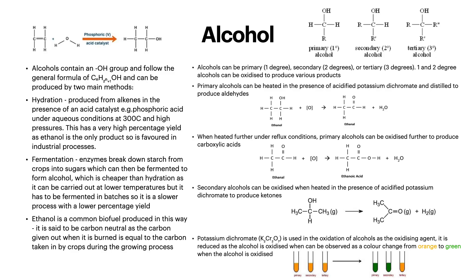Moving on to alcohols — these contain an OH group and follow the general formula CnH2n+1OH, and can be produced by two main methods. First, hydration: produced from alkenes in the presence of an acid catalyst, such as phosphoric acid, under aqueous conditions at 300°C and high pressures. This has a very high percentage yield as ethanol is the only product, so it is favoured in industrial processes. Second, fermentation: enzymes break down starch from crops into sugars, which are then fermented to form alcohol. This is cheaper as it can be carried out at lower temperatures, but it is a slower process with a lower percentage yield. Ethanol is a common biofuel produced this way and is considered carbon neutral.